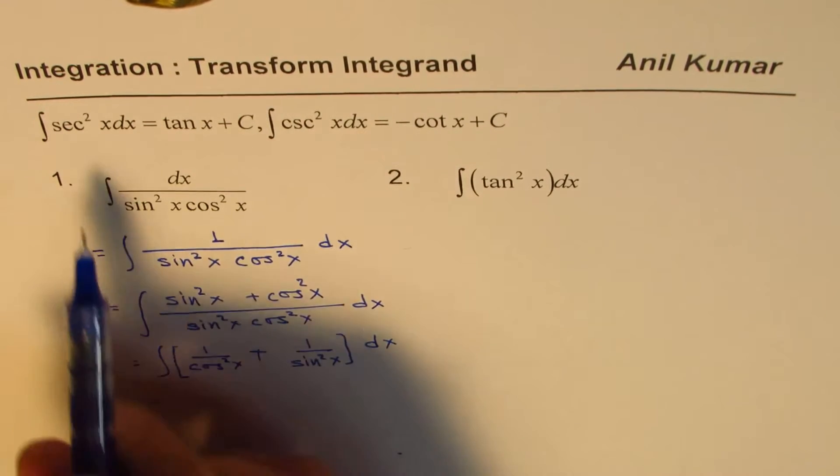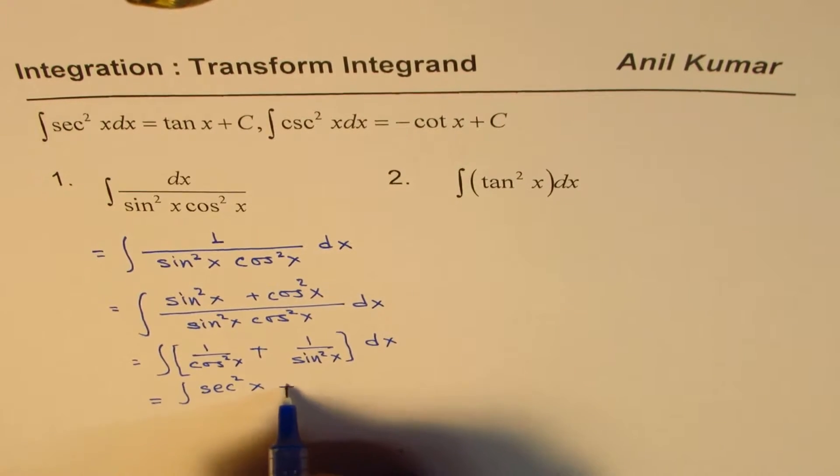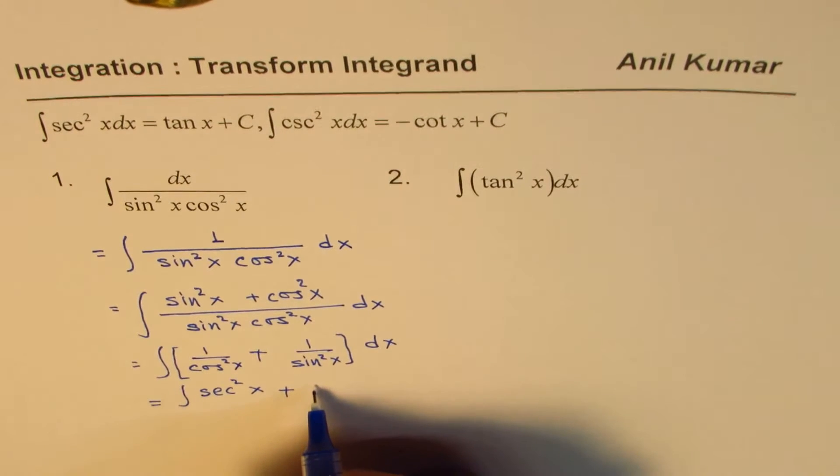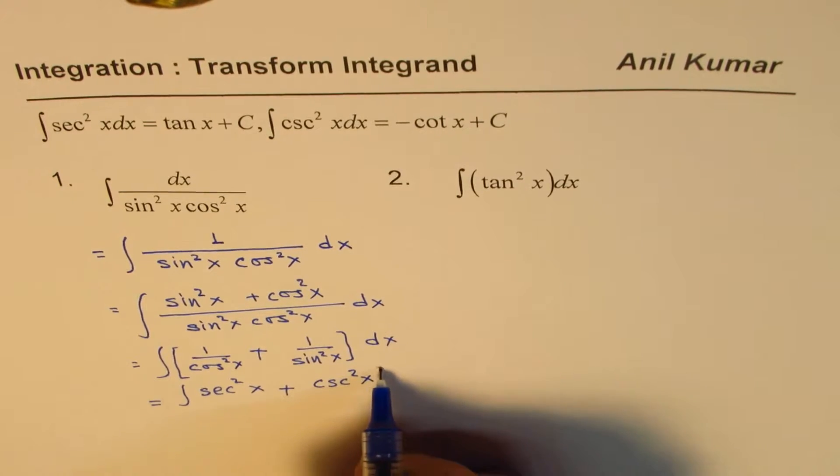Now, one over cos square x is secant square x. So we could write this as secant square x plus one over sin square x is cosecant square x. And so we can write this as cosecant square x.